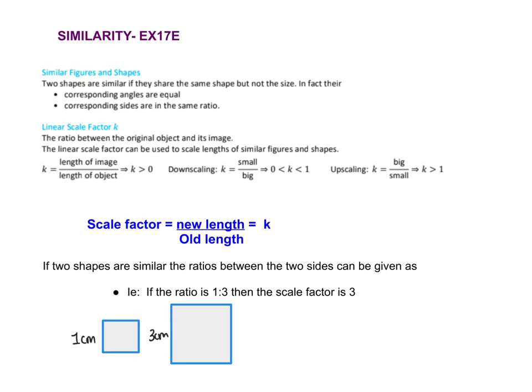Today we are looking at similarity. Two shapes are similar if they have the same corresponding angles, or if their corresponding sides are in the same ratio. For example, if you have a square and then a bigger square, they are similar because they all have 90-degree angles — all their angles are exactly the same.